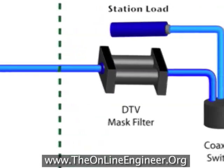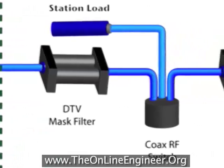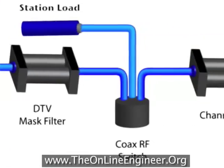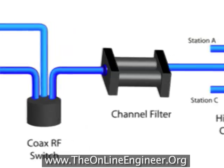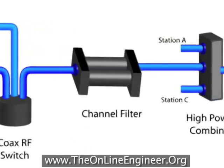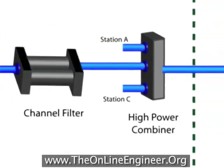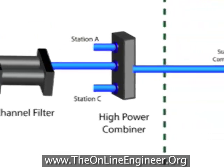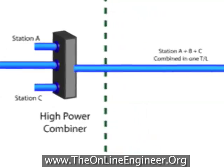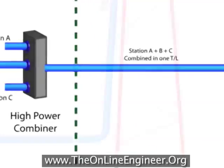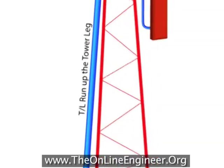Part 4 starts at the mask filter and goes on through our switching and combining as well as the antenna. At the end of this series you will have a basic understanding of what it takes to broadcast a digital signal over the air.